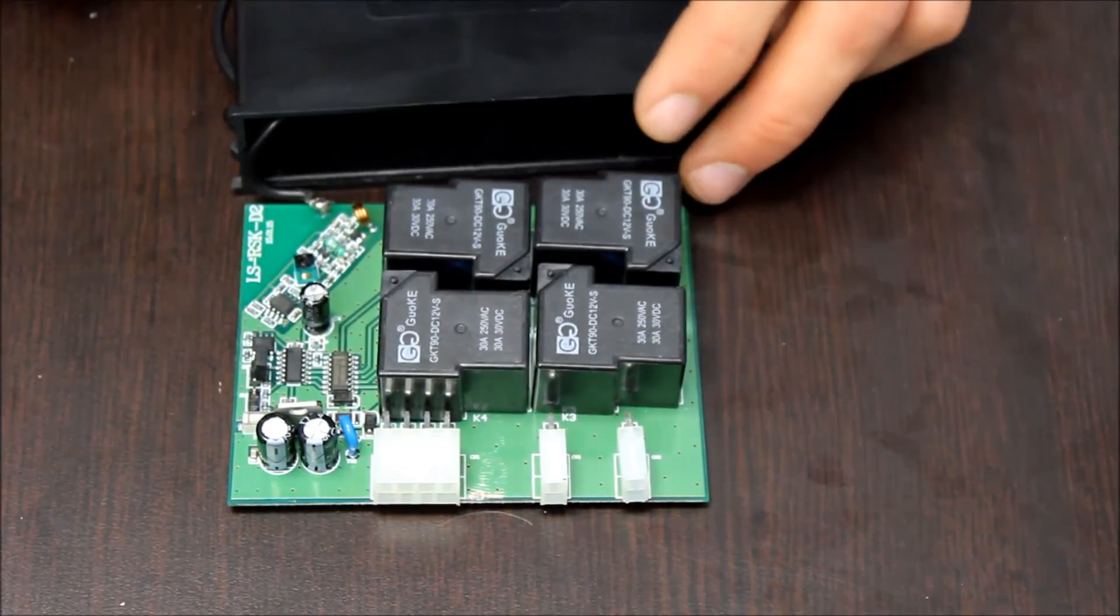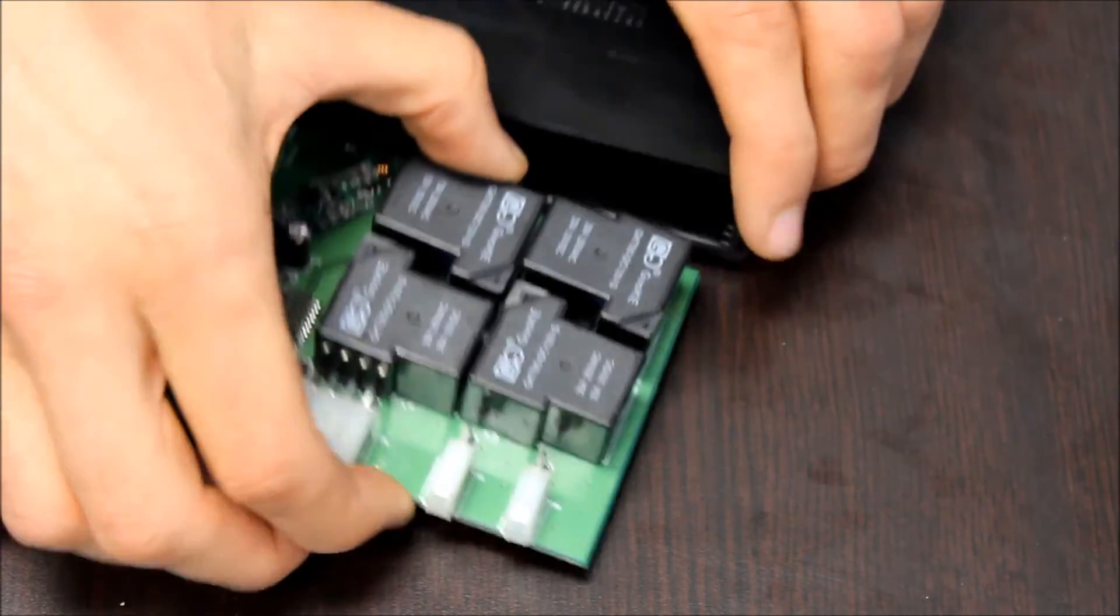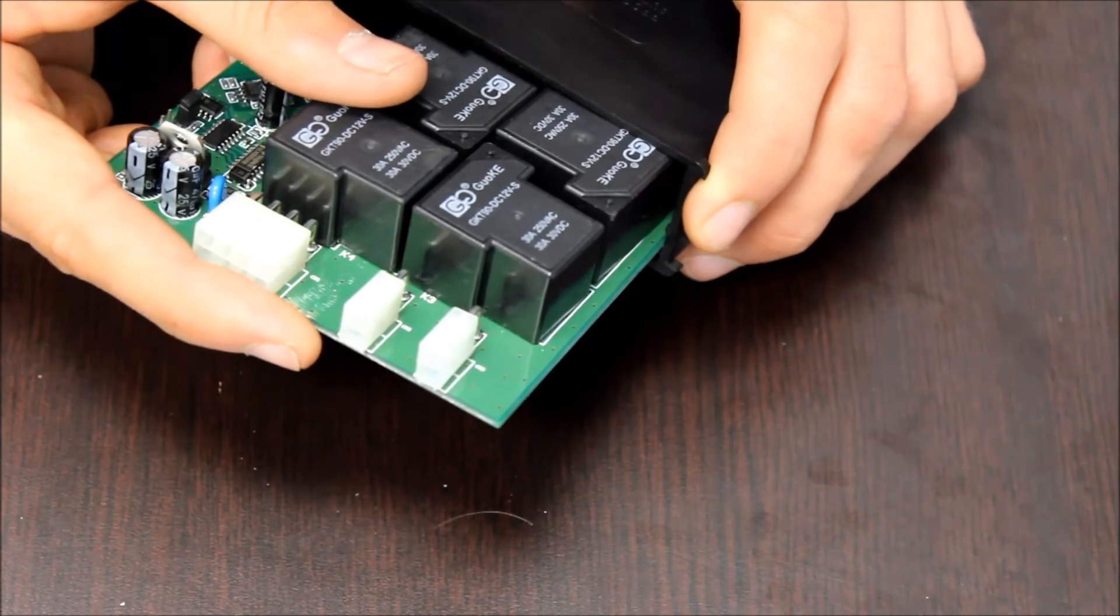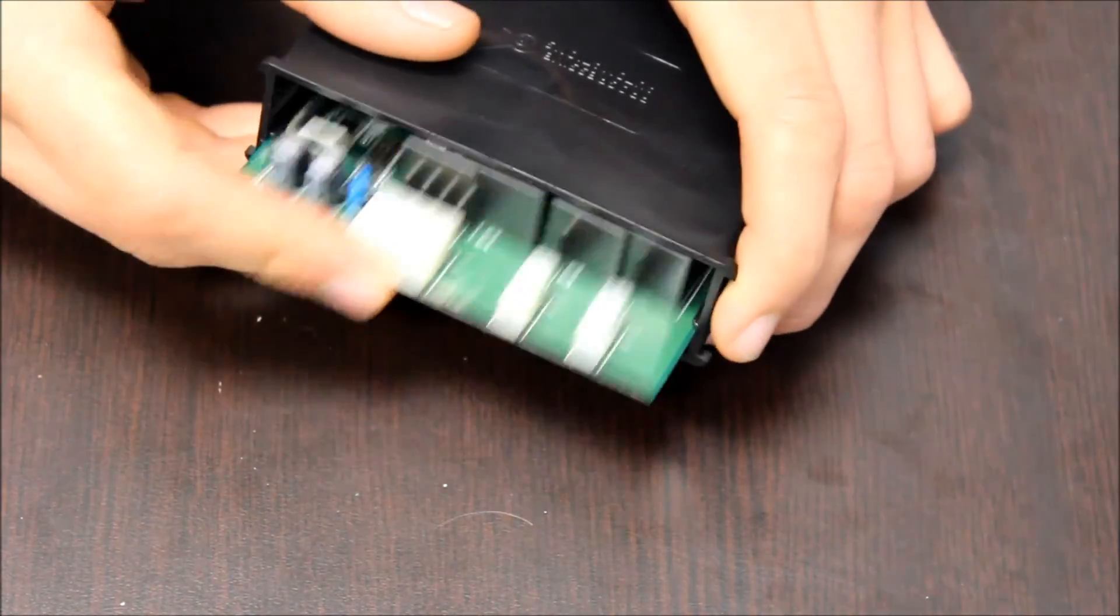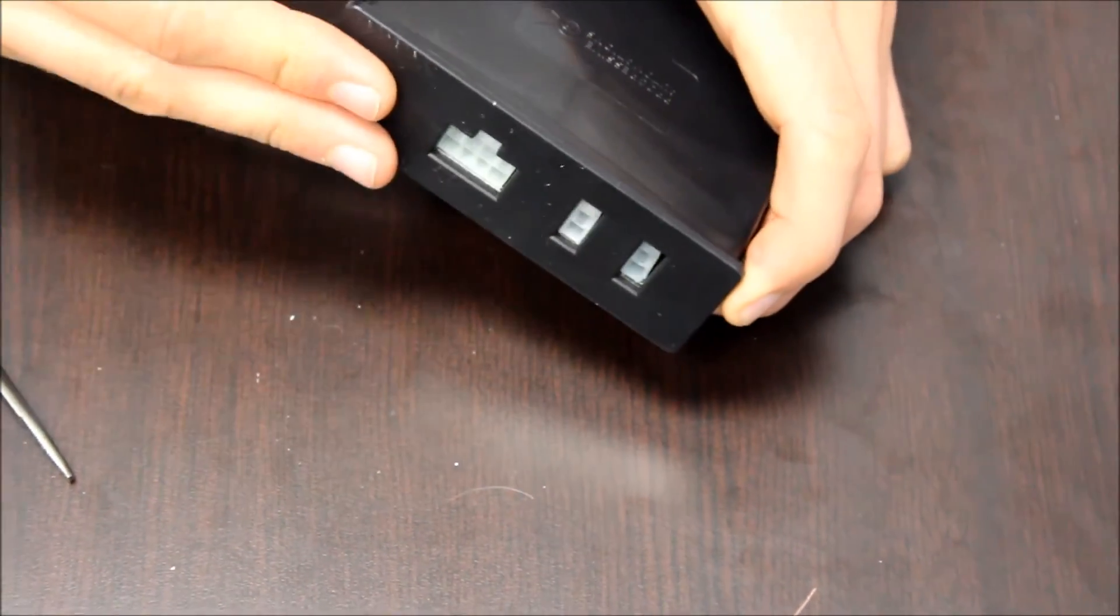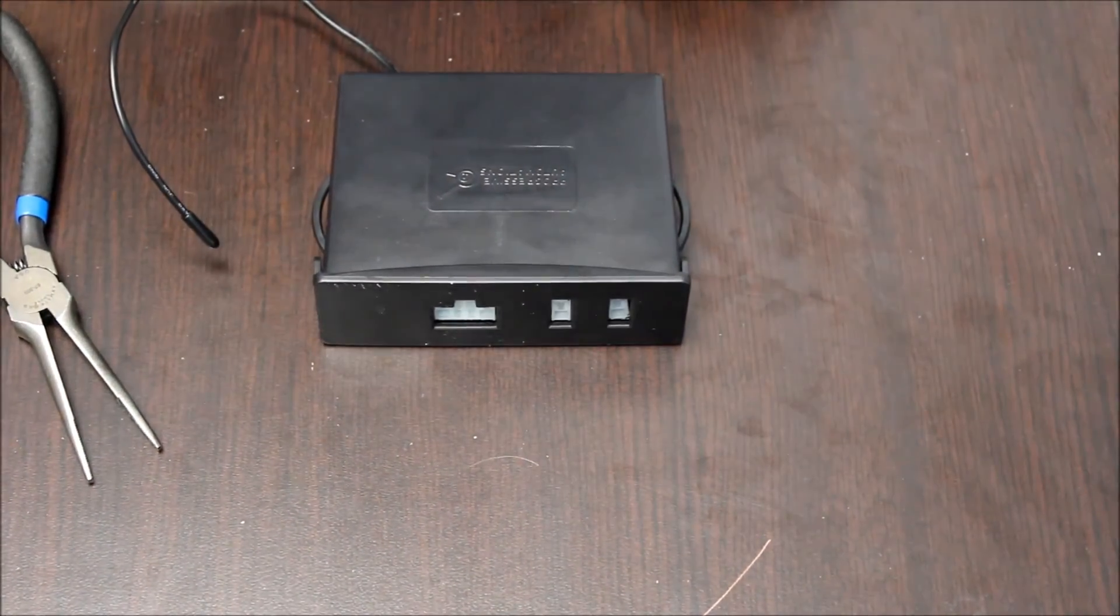Once you've put it in the position you want, you can slide the board back in. Make sure to slide the circuit board in the upper set of grooves so it slides in nicely. Then put the front control panel back on and you're ready to use it again.